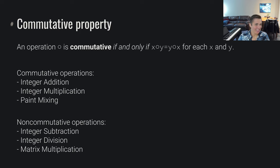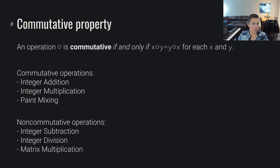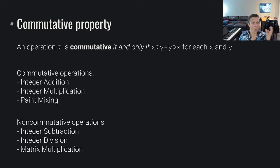Thinking back to math, we have the concept of the commutative property. The reason the paint exchange worked is due to the fact that the operations performed were commutative. An operation O is commutative if and only if X O Y equals Y O X for each X and Y. Some commutative operations you're familiar with are integer addition, integer multiplication, and as we just showed, paint mixing. By contrast, non-commutative operations include integer subtraction, integer division, and matrix multiplication.